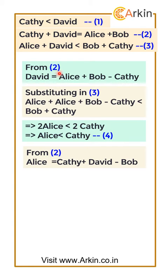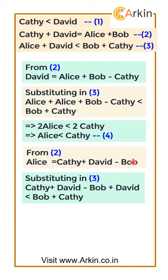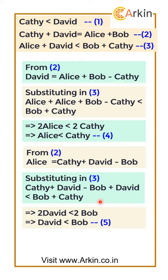From equation 2 again, let us find the value of Alice: Alice equals Kathy plus David minus Bob. Substituting this into equation 3 instead of Alice — writing Kathy plus David minus Bob — and solving, we get that David has less money than Bob. Let's write this as equation 5.